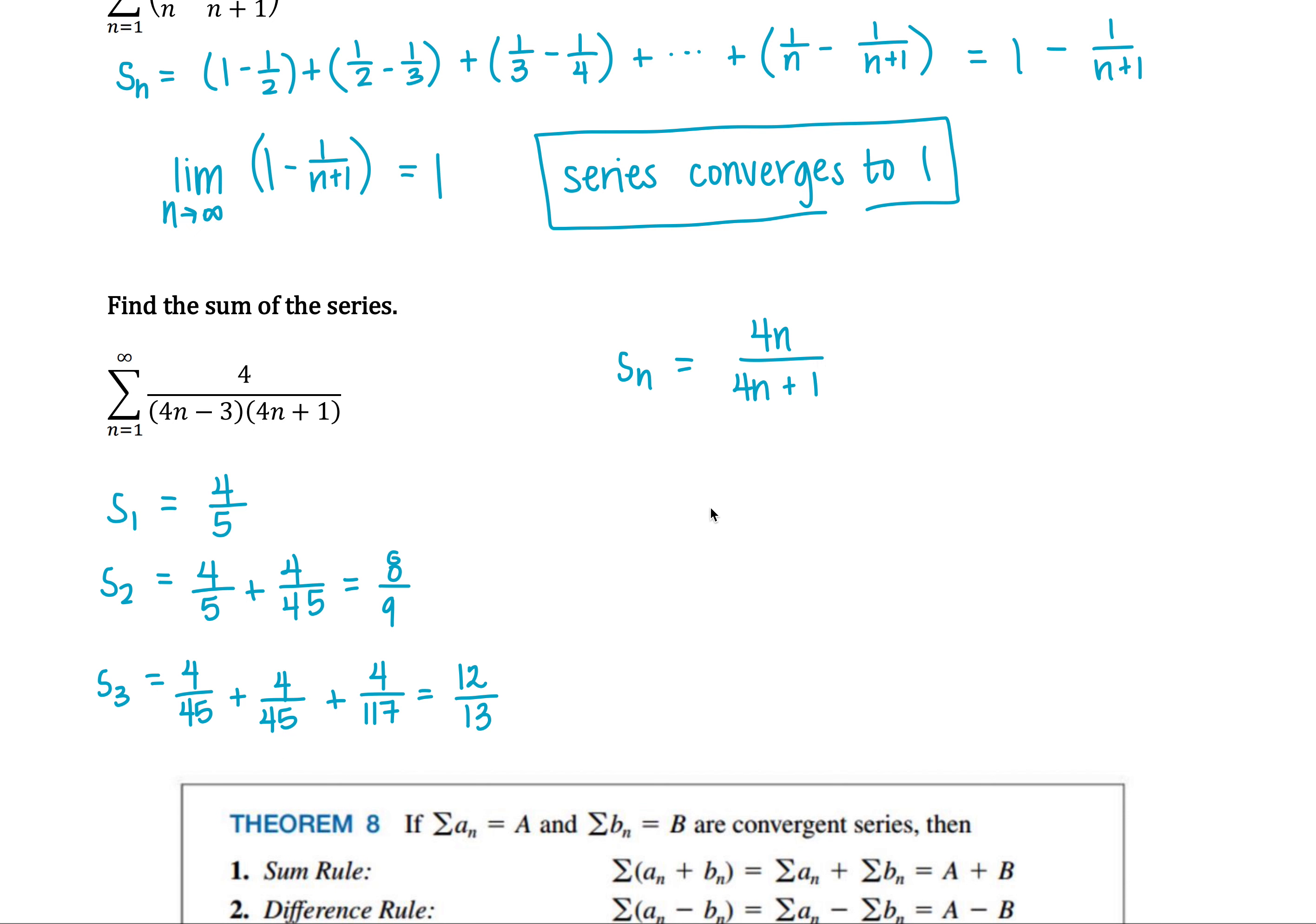With my nth partial sum just being 4n over 4n plus 1, I can find the limit of that to find the sum of the series. So as n goes to infinity, we get the limit here of 4n over 4n plus 1.